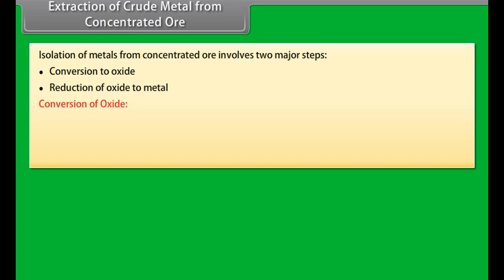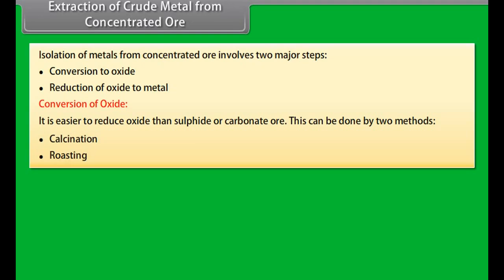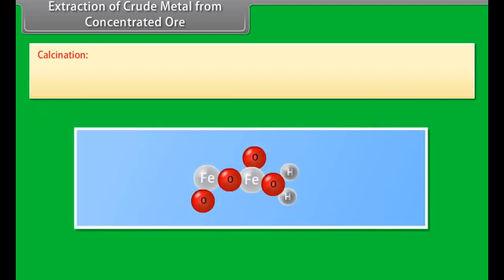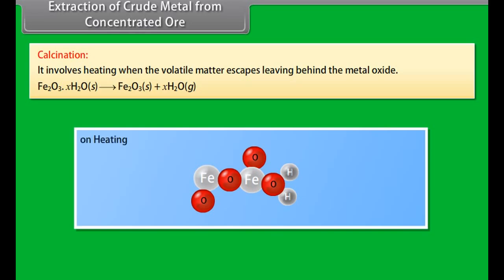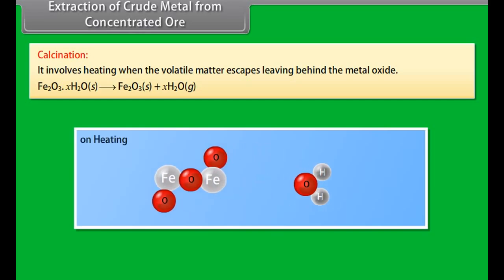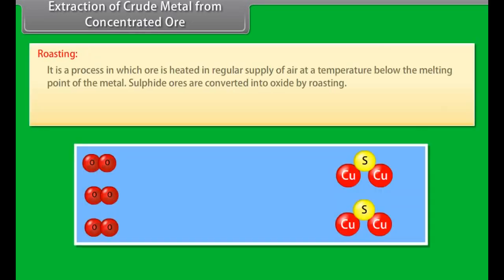Extraction of crude metal from concentrated ore. The concentrated ore must be converted into a form which is suitable for reduction. Oxides are easier to reduce. Thus, isolation of metals from concentrated ore involves two major steps: Conversion to oxide and reduction of oxide to metal.